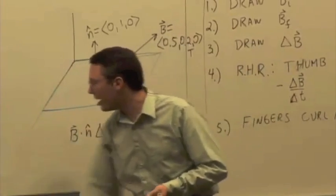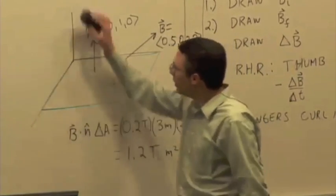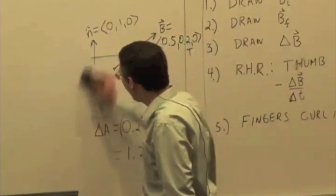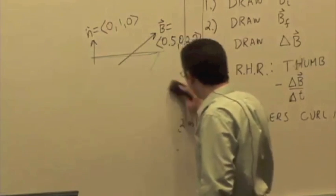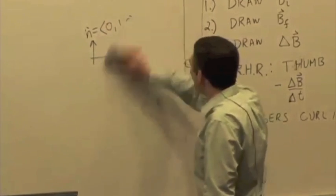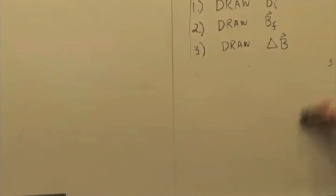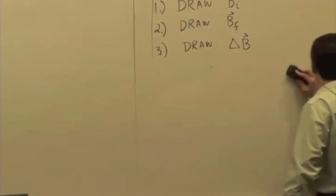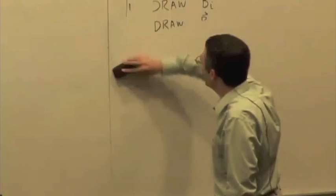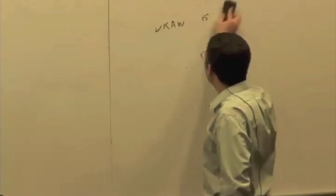We saw that last time when we were doing the little demo with the bar magnet with the other coil. If the magnetic field was changing, we got the galvanometer to deflect. If it wasn't, if it was a constant magnetic field, constant in time, then there was no current induced.